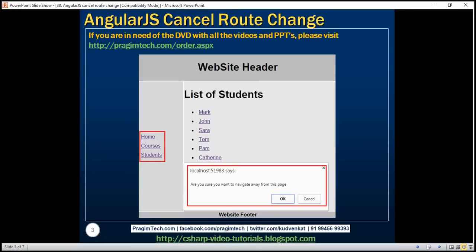Let's say at the moment we are on the list of students page. If I click on any other navigation links like home or courses, we want to present the user with a confirmation message: 'Are you sure you want to navigate away from this page?' If I click OK, we want to allow the route change and the user will be navigated to the new route. If I click Cancel, then we want to cancel the route change and the user will stay on the same page.